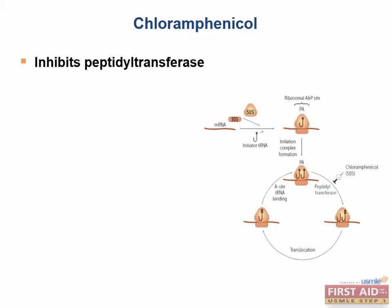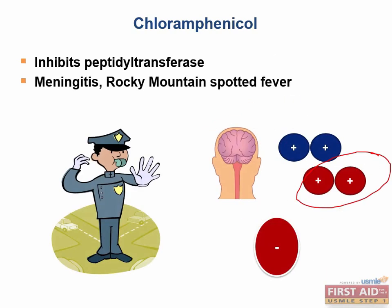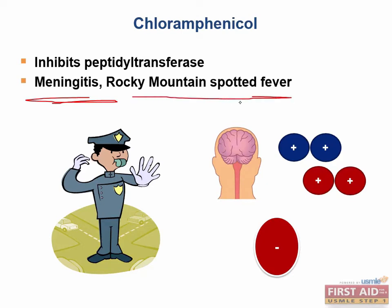Chloramphenicol inhibits the peptidyl transferase enzyme of the 50S ribosomal subunit. Classically, chloramphenicol is used to treat meningitis caused by Strep pneumoniae, Neisseria meningitidis, or Haemophilus influenzae — the three common causes of meningitis. It is also effective treatment for Rocky Mountain spotted fever. Chloramphenicol is a bacteriostatic drug.